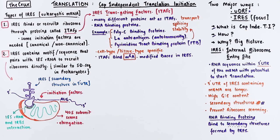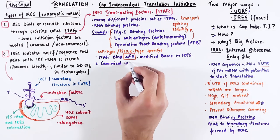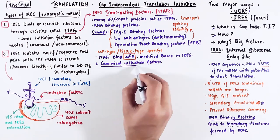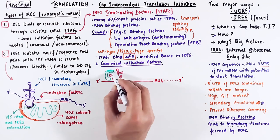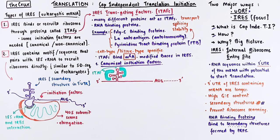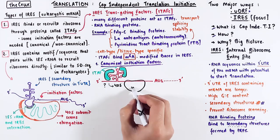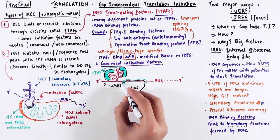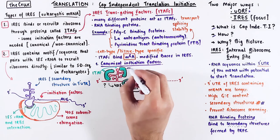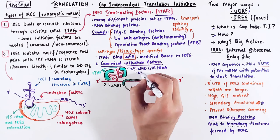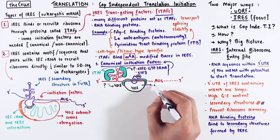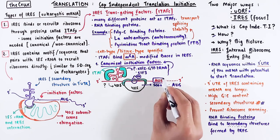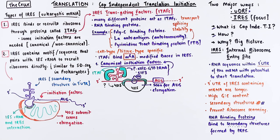There are two main ways in which ITEFs work. One utilizes the canonical initiation factors. The process begins when the ITEFs recognize the secondary structure formed by the IRES in the 5' UTR. Then the ITEFs recruit the 40S subunit through some unknown mechanism. These ITEFs also help in the recruitment of canonical initiation factors like EIF2 and EIF3. Following the recruitment of the initiator tRNA and canonical initiation factors, the 40S subunit scans for a start codon and enters the elongation stage.